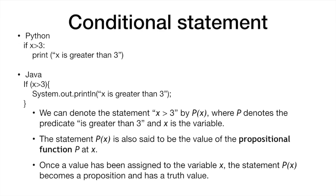We can denote the statement x greater than 3 by P(x), where P denotes the predicate 'is greater than 3' and x is the variable. The statement P(x) is also said to be the value of the propositional function P at x — terminology found in several books and articles on this topic. Once we assign a value to the variable x, then the statement P(x) becomes a proposition and will have a truth value.